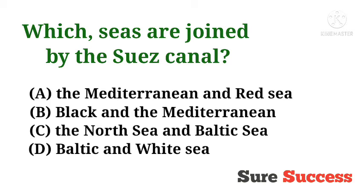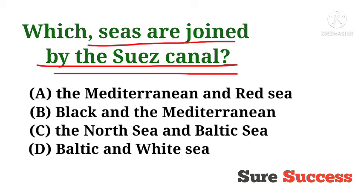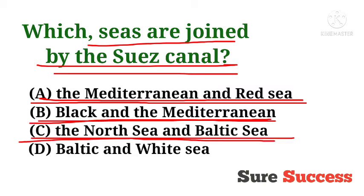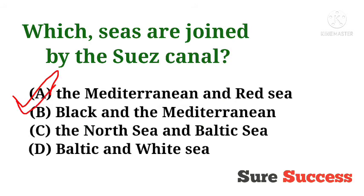Which seas are joined by the Suez Canal? The options are the Mediterranean and Red Sea, Black and Mediterranean, the North Sea and Baltic Sea, and Baltic and White Sea. The correct answer is the Mediterranean and Red Sea — these are the seas joined by the Suez Canal.